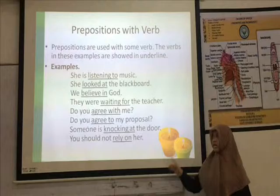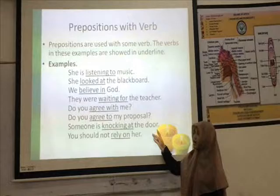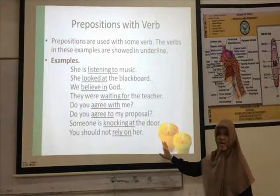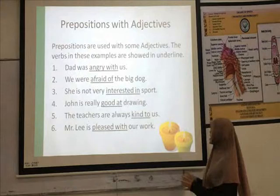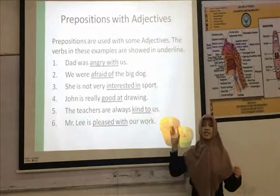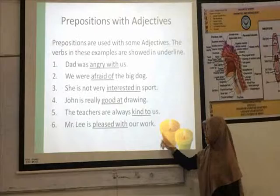Prepositions can be combined with verb, adjective, and noun. Here are the examples of preposition with verb: she is listening to music. 'Listening' is the verb and 'to' is the preposition. The second is preposition with adjective. For example: he was angry with us. 'Angry' is the adjective and 'with' is the preposition. You can see other examples here.